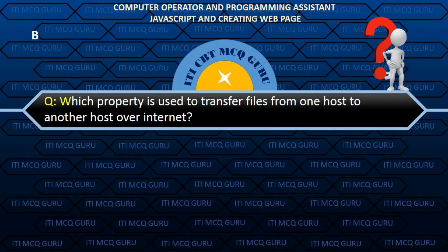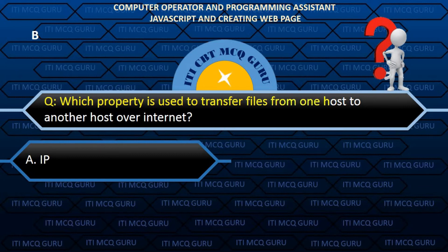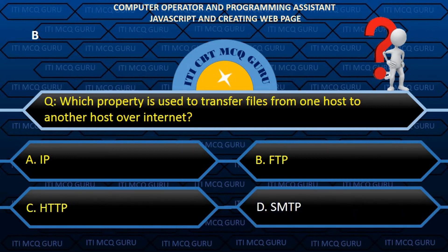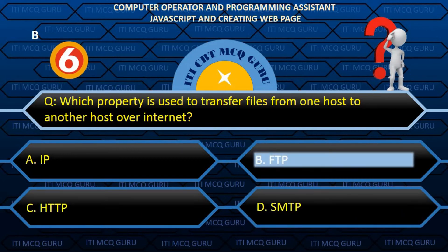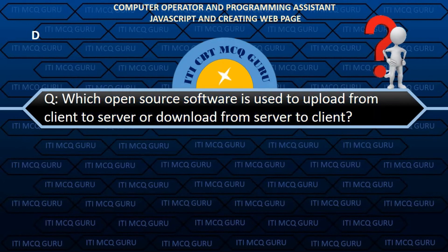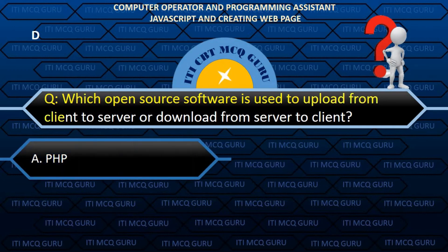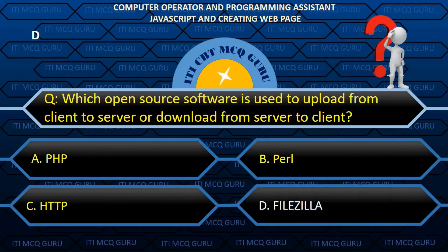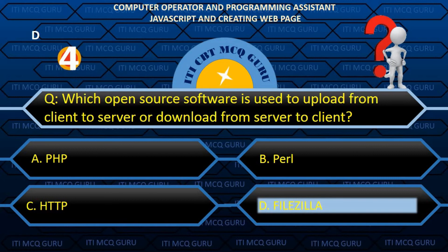Which property is used to transfer files from one host to another host over the internet? B. FTP. Which open source software is used to upload from client to server or download from server to client? D. FileZilla.